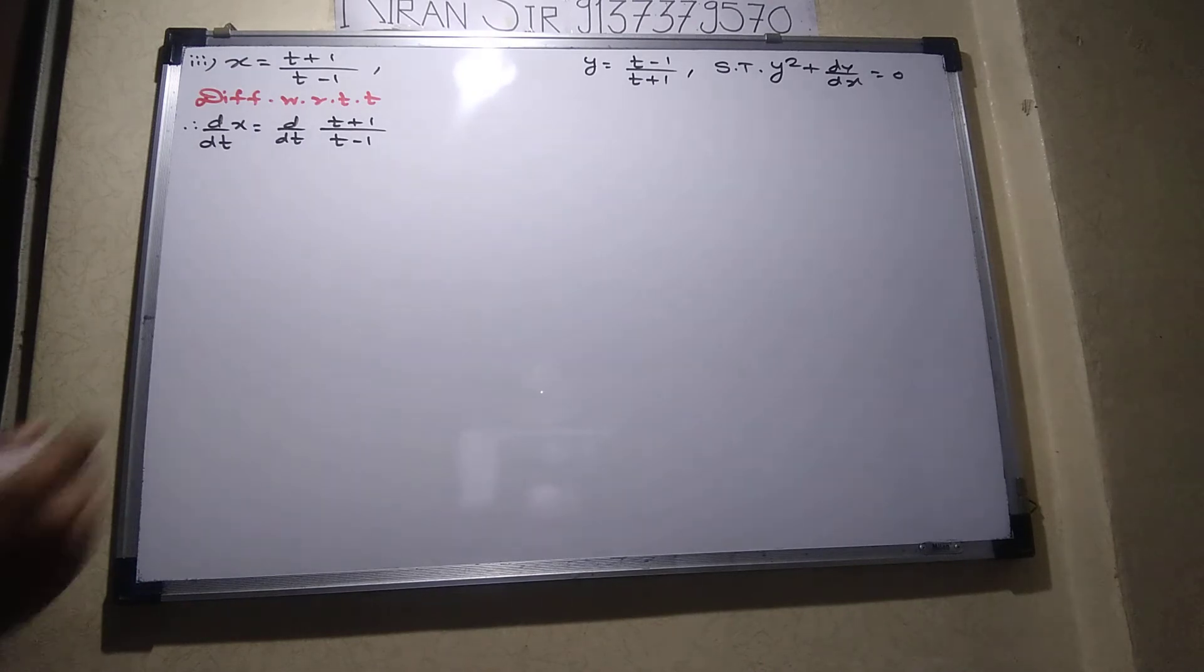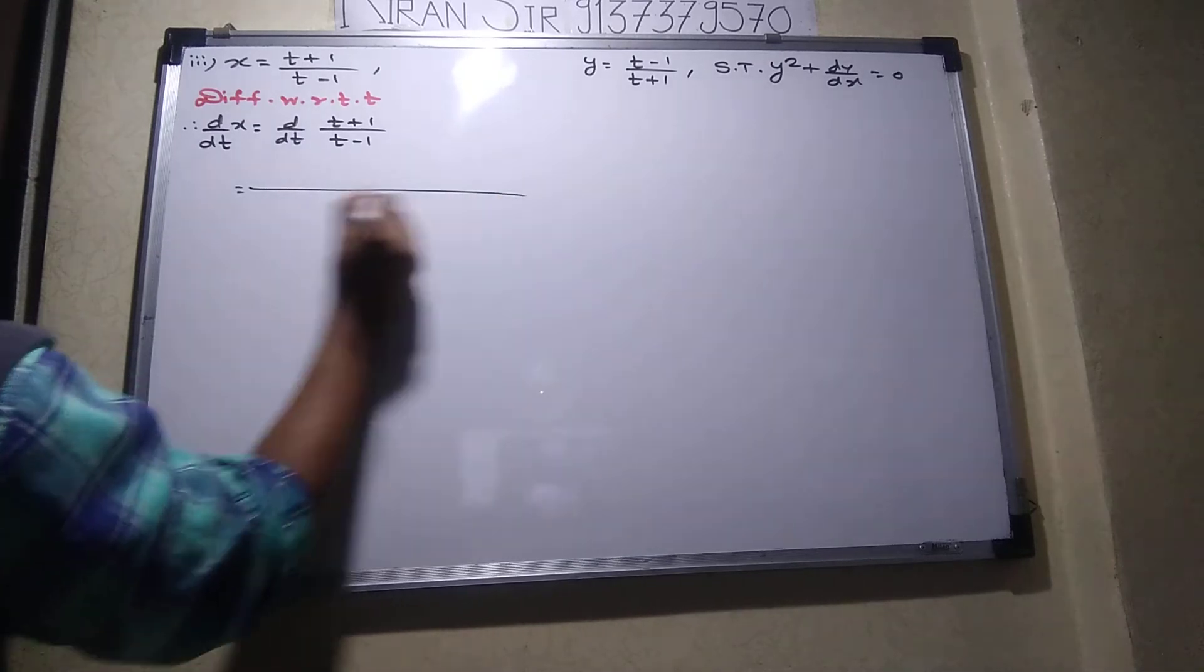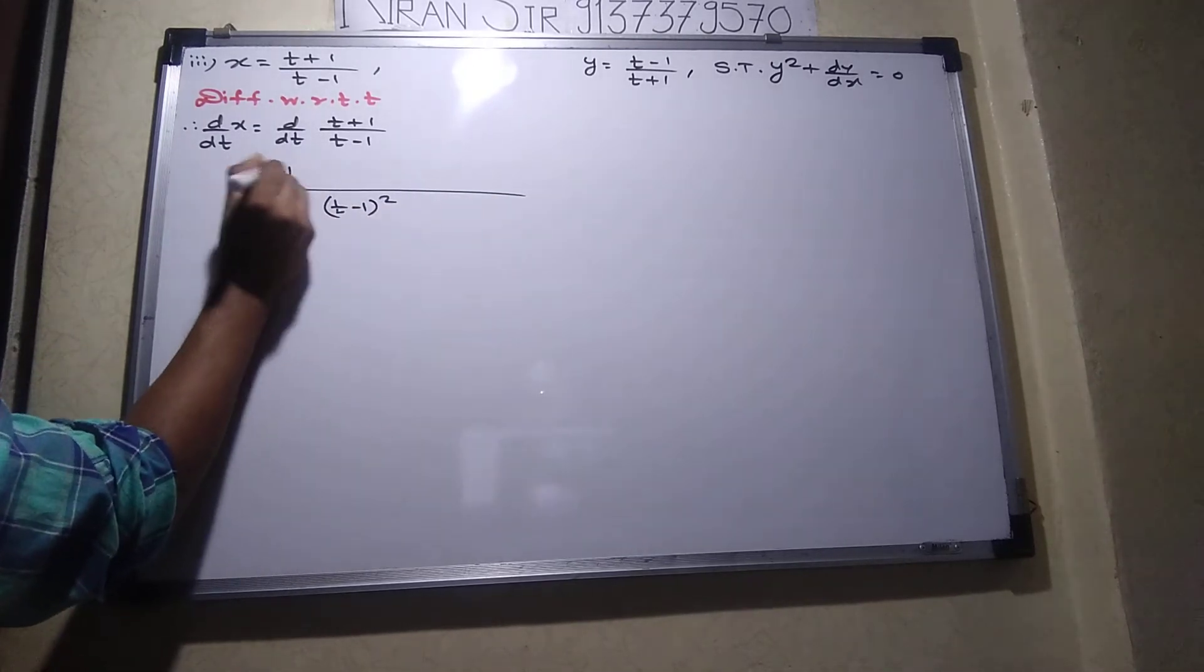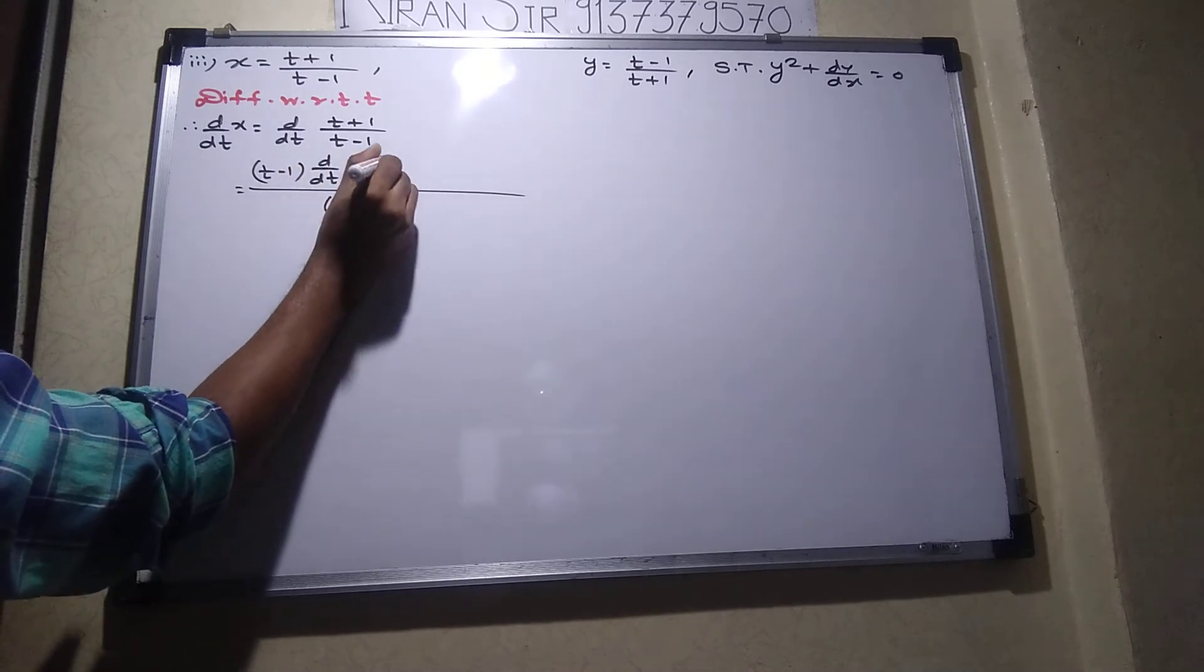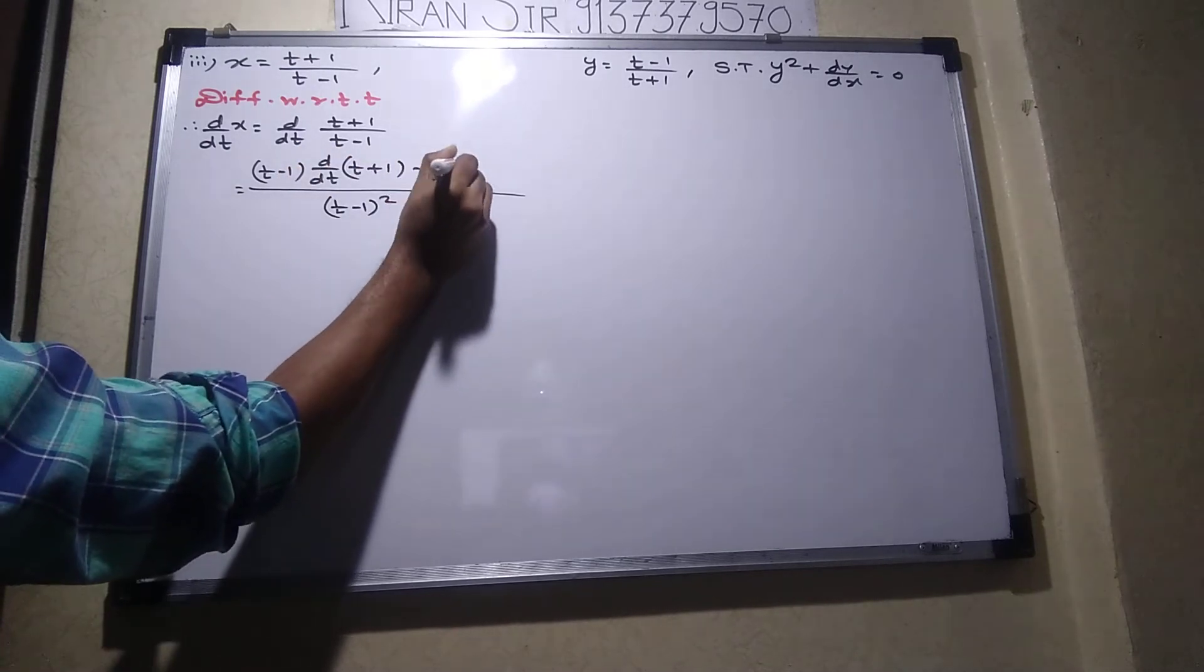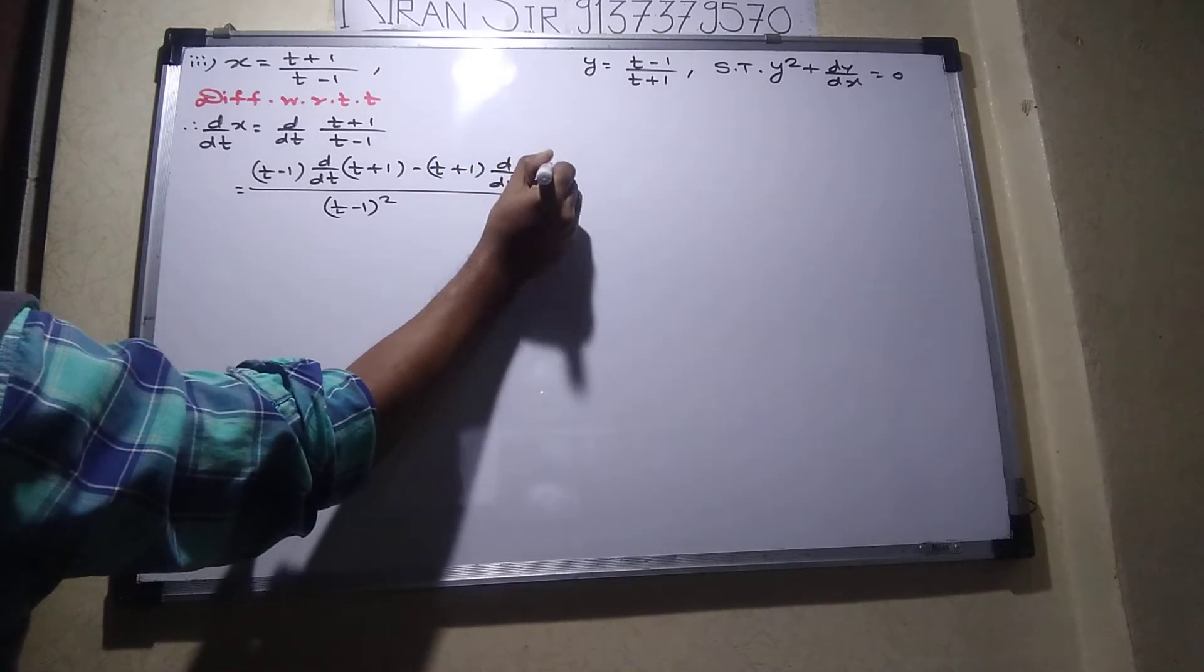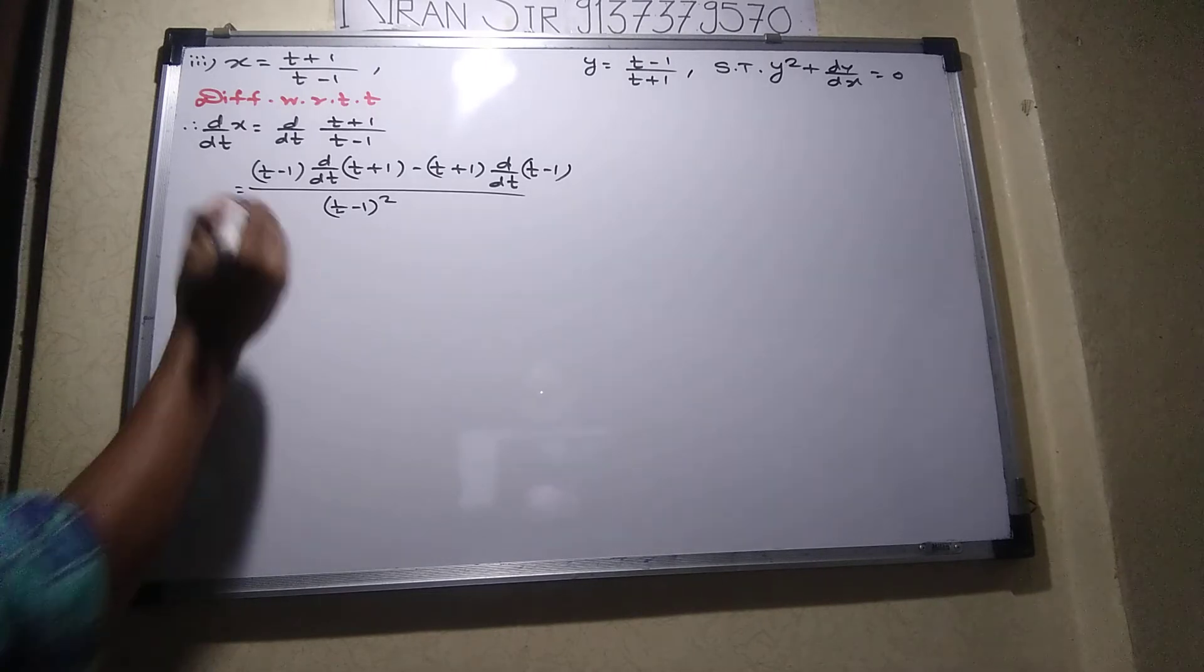Let's start the function of u upon v. So t plus 1, t minus 1, d by dt of t plus 1 minus t plus 1, d by dt of t minus 1. Let us do the next one, just simplify.